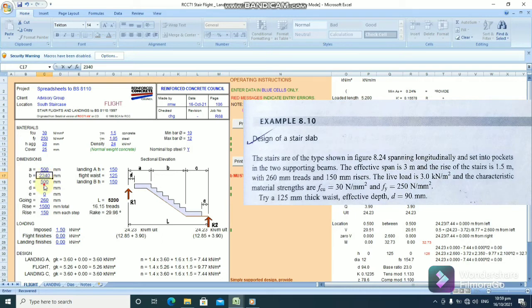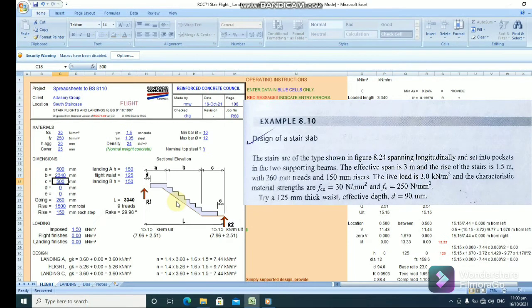Now, remember we said the span of the staircase is 3 meters. So, meaning that if we deduct 2340 from 3000, we have 660. So, let's divide that 660 by 2. And, that will give us 330.